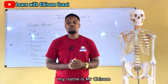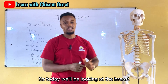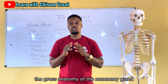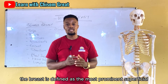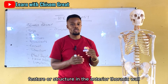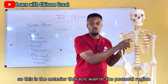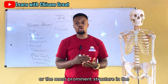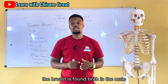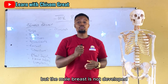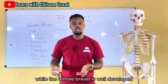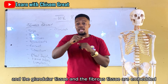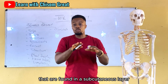Good day everyone, my name is Mr. Chissom. Today we'll be looking at the anatomy of the breast, otherwise known as the mammary gland — specifically the gross anatomy. The breast is defined as the most prominent superficial structure in the anterior thoracic wall, or pectoral region. It is found in both male and female, but the male breast is not developed while the female breast is well developed. The breast contains glandular tissues and fibrous structures, which are embedded and covered by fat found in the subcutaneous layer.